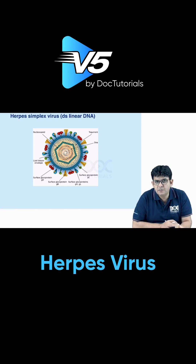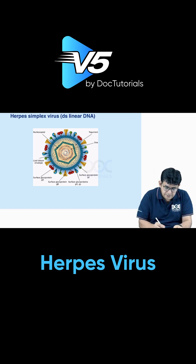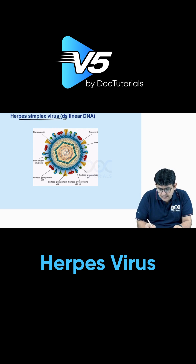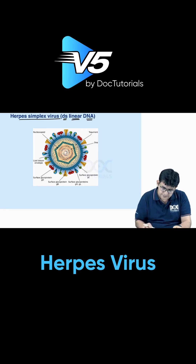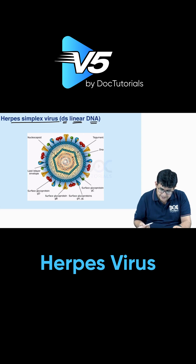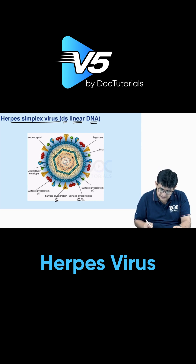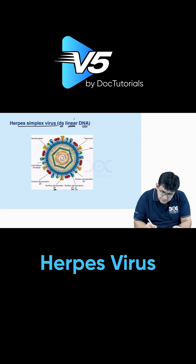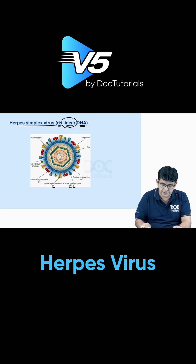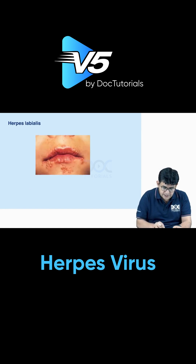After discussing herpes, let's look at the pictures. The herpes simplex virus has a double-stranded linear DNA. As shown in the image, it has a lipid bilayer envelope, nucleocapsid, and DNA. It also has glycoproteins GH, GL, GB, and GC. The important thing to remember is the linear DNA.